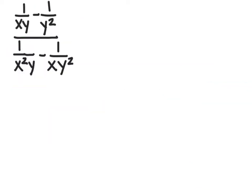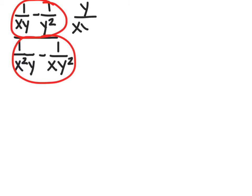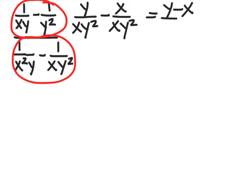Here's another one to practice: 1 over xy minus 1 over y squared, all over 1 over x squared y minus 1 over xy squared. This looks complicated but it's not so bad — we just separate it into the numerator and then the denominator. In the numerator, the common denominator needs an x and 2 y's, so we get y over xy squared minus x over xy squared, which gives us y minus x over xy squared.